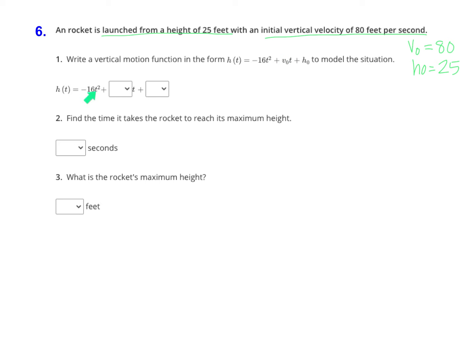You can see the negative 16 is already written there, negative 16t squared. Let's put v sub zero in front of the t, so we're gonna pick 80 from the drop down and then plus 25 on the end. And that's the first step, just writing your equation.